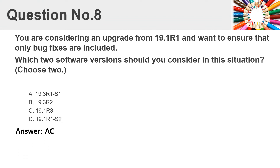Question number eight. You are considering an upgrade from 19.1R1 and want to ensure that only bug fixes are included. Which two software versions should you consider in this situation? Choose two. A. 19.3R1-S1. B. 19.3R2. C. 19.1R3. D. 19.1R1-S2. Answer: A, C.